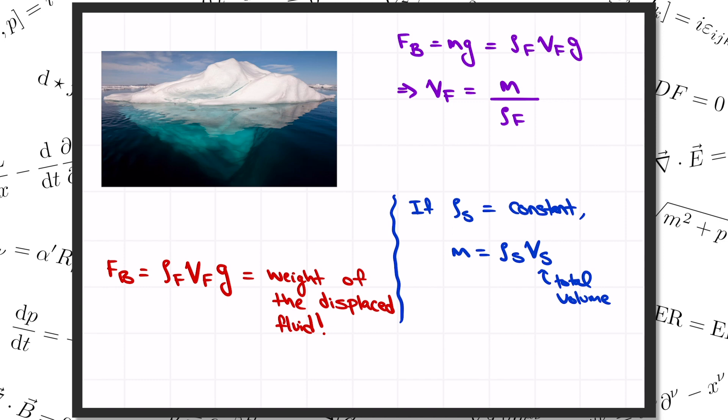Then, if we plug in our formula for the mass, we can write the volume of the object that sits underwater as the density of the object times its total volume divided by the density of the fluid. And so we can solve here for the ratio of the volume that's under the surface to the total volume of the object. And we find that it's equal to the ratio of the densities, the density of the solid divided by the density of the fluid.